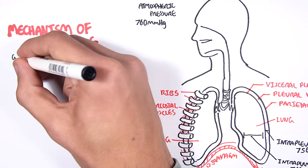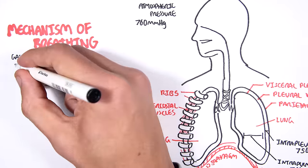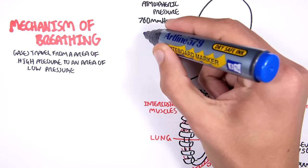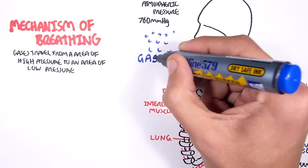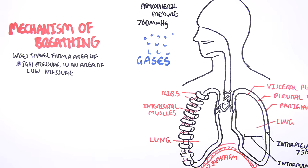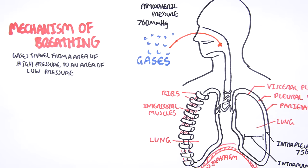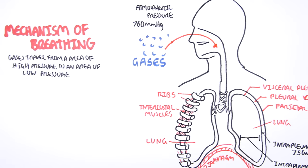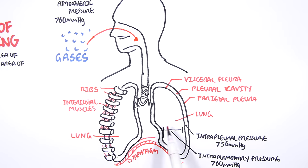Remember the rule: air travels from an area of higher pressure to an area of lower pressure. So the air outside will only travel into the lungs when the intrapulmonary pressure drops. How does the intrapulmonary pressure in our lungs decrease?